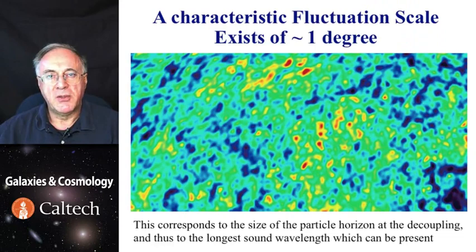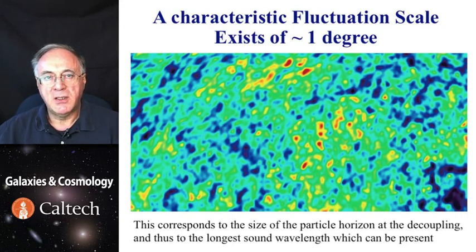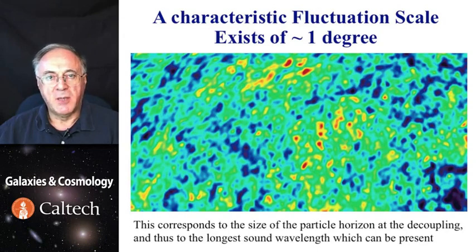Here is an image from the Boomerang measurement, a false color representation of temperature fluctuations in the sky. You can see that there are characteristic size blobs that turn out to be about one degree. That is actually the size of the particle horizon at the time of decoupling.